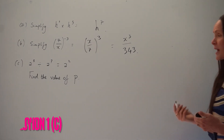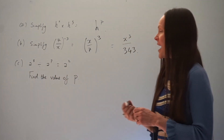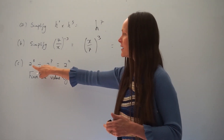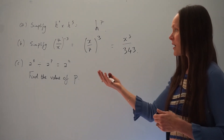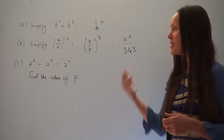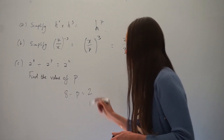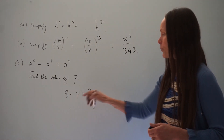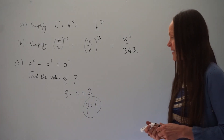In part C, we have been given an equation: a to the power of 8 divided by a to the power of P equals a squared, and we have to find the value of P. When we're dividing, we subtract the powers. So applying the rules of indices, we're doing 8 take away P, which gives us the new power of 2. So 8 minus P equals 2 — what do I subtract from 8 to equal 2? P has to be 6, because 8 minus 6 equals 2.